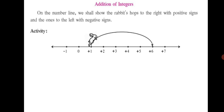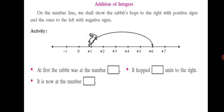On a number line, the numbers to the left of zero are negative and to the right of zero are positive. This activity is in your textbook on page number 16. At first the rabbit was at the number plus one. It hopped some units to the right. Counting from plus one: one, two, three, four, five units. The rabbit has hopped five units in total to reach plus six.